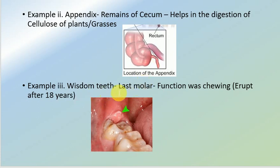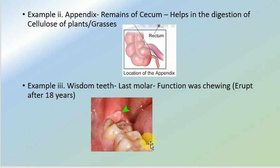Likewise, wisdom teeth are another example. Nowadays we do not chew as much, but our ancestors chewed extensively, likely consuming raw or non-vegetarian food, and required more molars. Since we no longer take as much raw food, the number of molars is decreasing and wisdom teeth have become a vestigial organ.